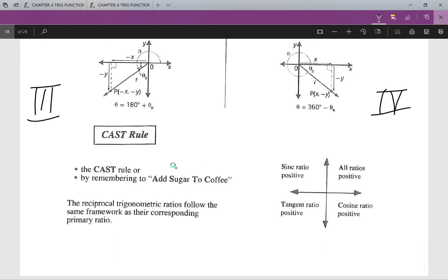Quadrant three both are negative, and quadrant four x is positive, y is negative. We get what we call the CAST rule: C-A-S-T.